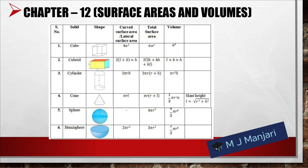For a cylinder: curved surface area = 2πrh, total surface area = 2πr(r+h), volume = πr²h. For a cone: curved surface area = πrl, total surface area = πr(r+l), volume = (1/3)πr²h, and slant height l = √(r²+h²).